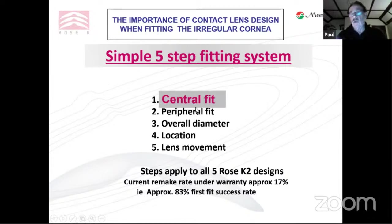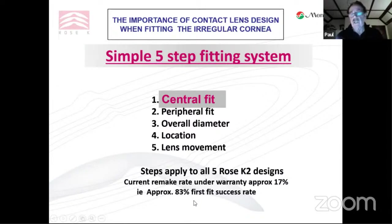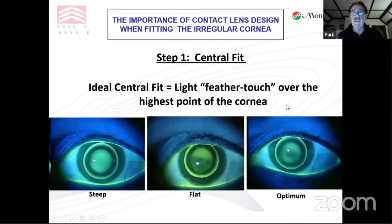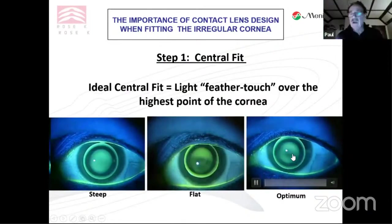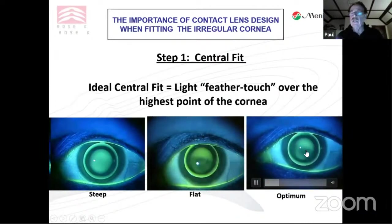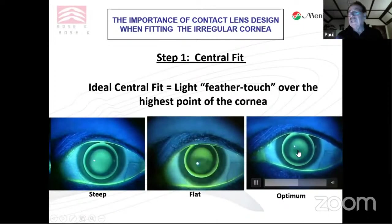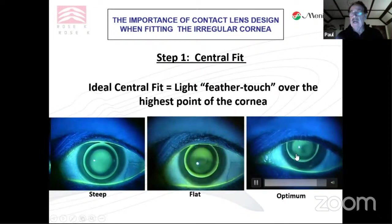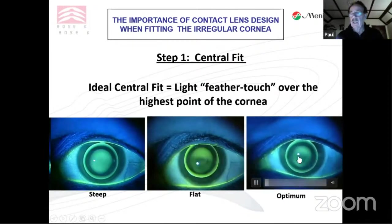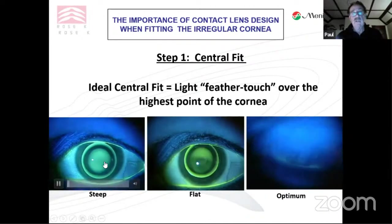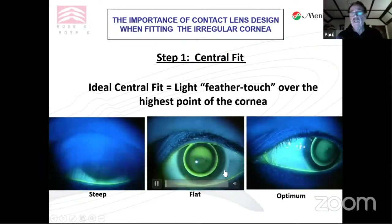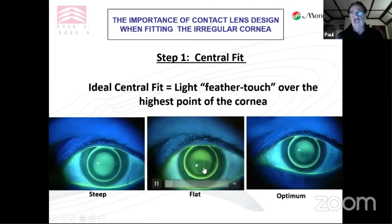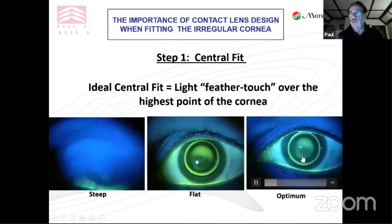I advocate a five-step fitting system — in order: central fit, peripheral fit, diameter, location, and lens movement. Once familiar with fitting my designs, studies over the last 20-odd years show fitters can expect over an 80% success rate with their first ordered lens. With a corneal lens, we're trying to achieve a light feather touch — not actual touch, because we still have about 20 to 30 microns clearance. If you see pooling centrally, it's too steep and you need to flatten the base curve; if you see bearing over the apex, it's too flat and you need to go steeper.